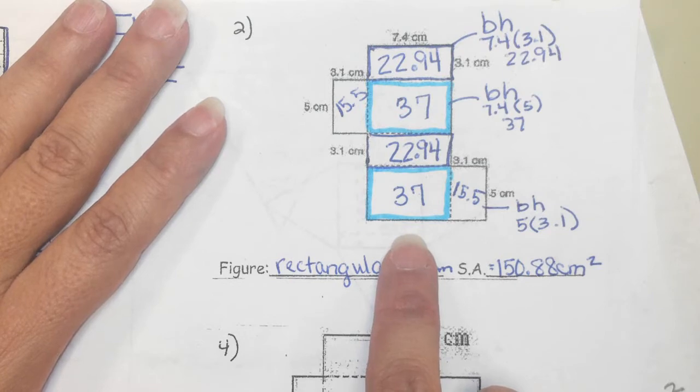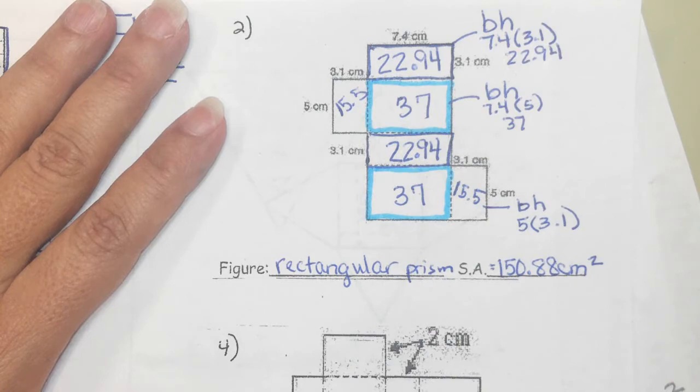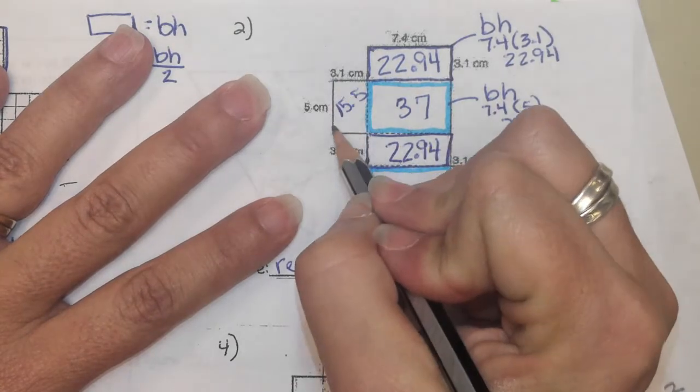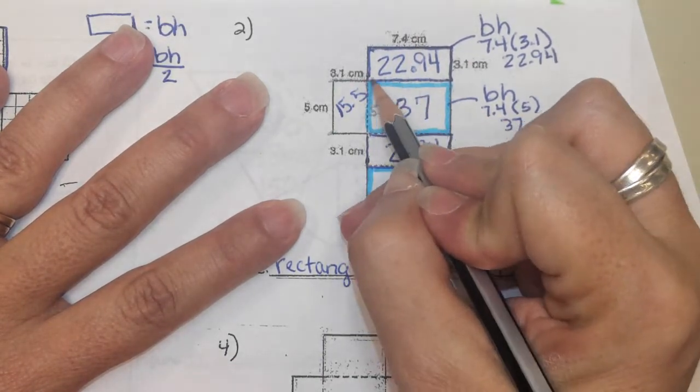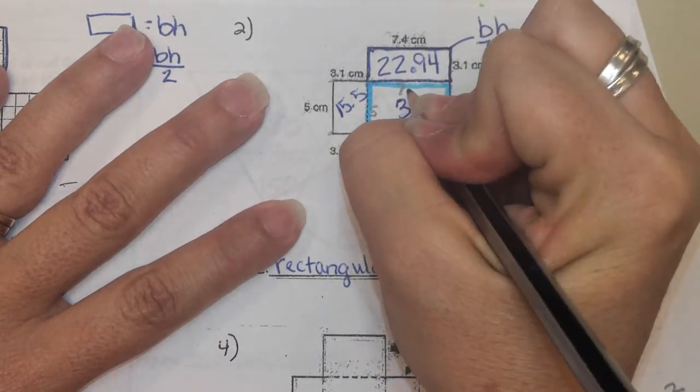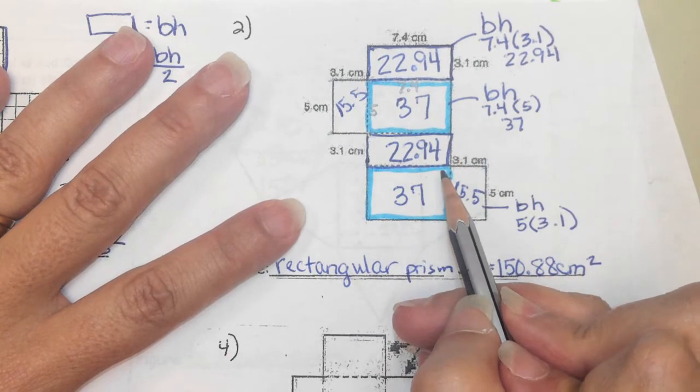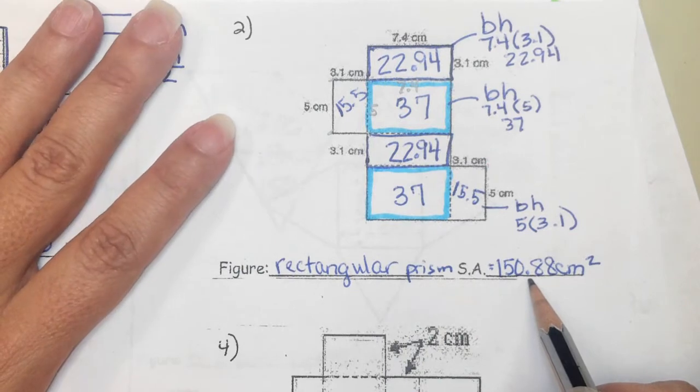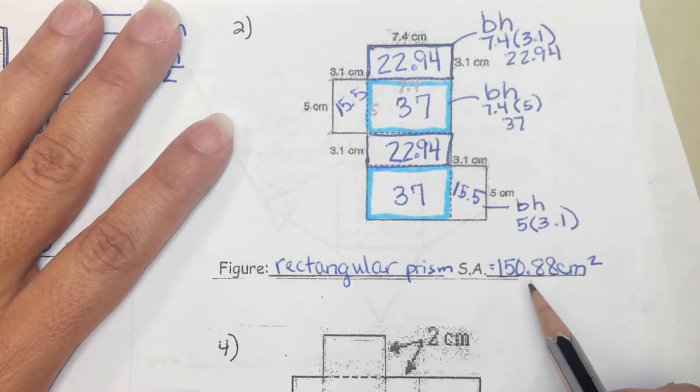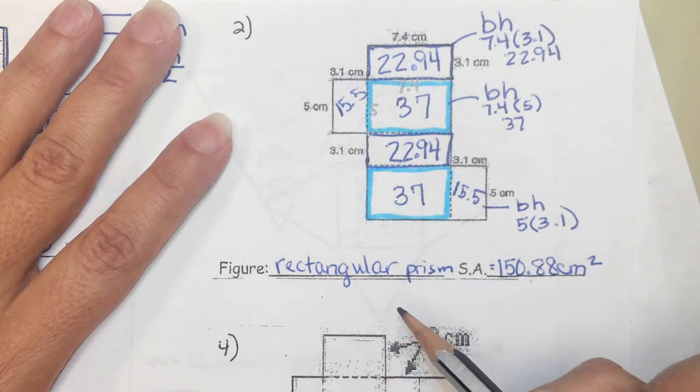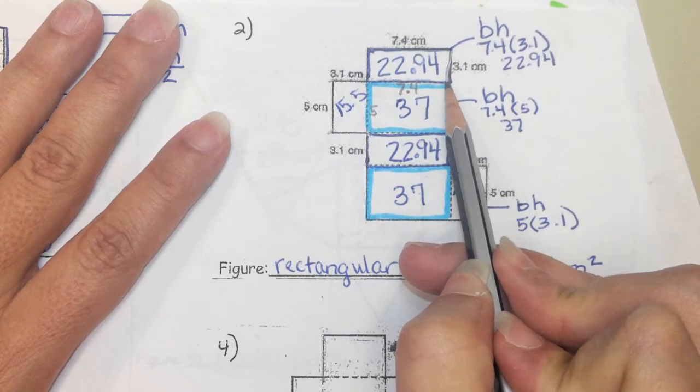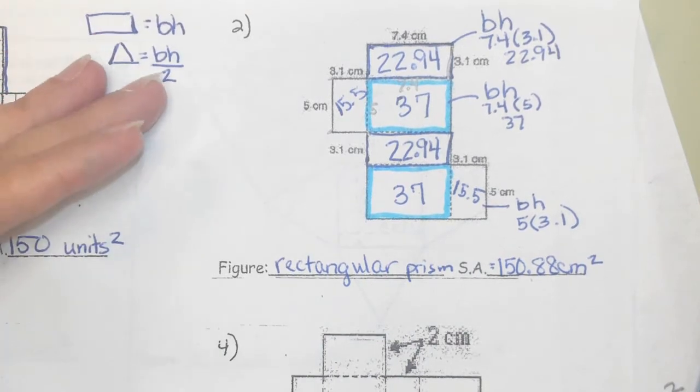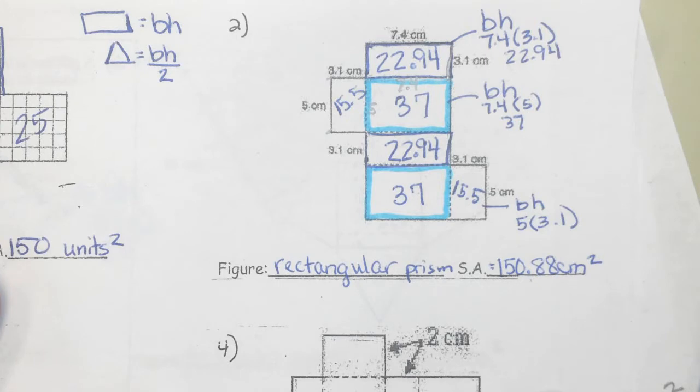When we add all this up, we would get 150.88 centimeters squared, and that thing is a rectangular prism. If you have a question, ask me. This one has the two boxes are different than the other two boxes. Does anybody have a question on this one? If from here to here is 5, from here to here is also 5, so that one is 5. 7.4 is that one, and that's been the hardest thing to get for most kids.